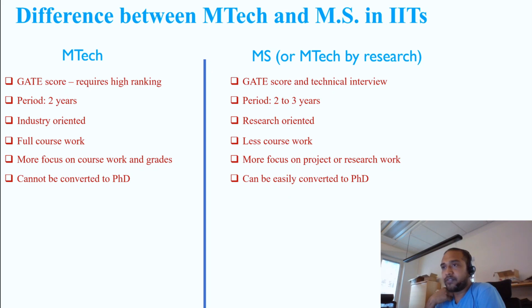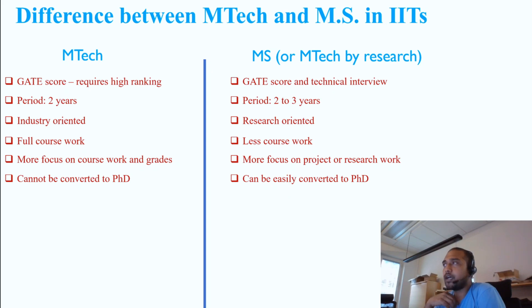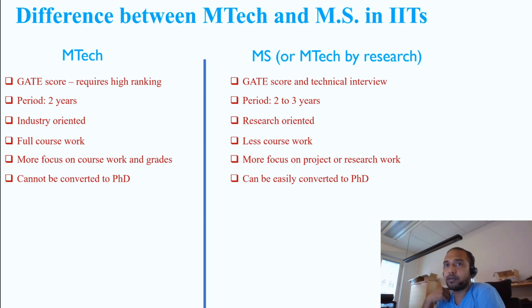One more important difference: an MTECH student who wants to do a PhD has to complete MTECH first and then enroll for PhD — you cannot convert MTECH into a PhD. Whereas if you are doing MS, you can easily convert to PhD after the first or second year, since MS is already a kind of mini PhD. It is quite easy to make that transition, whereas for MTECH you must complete the course first and then enroll for PhD.